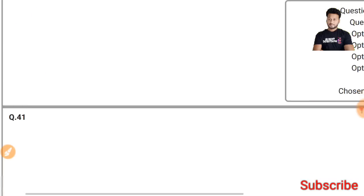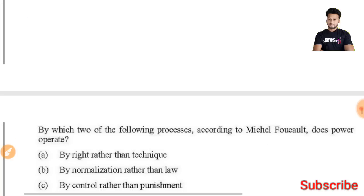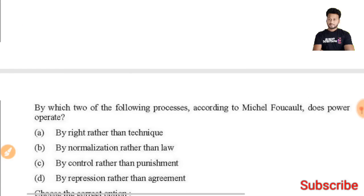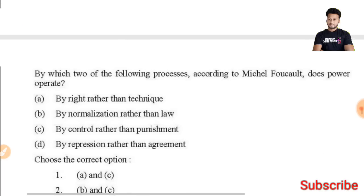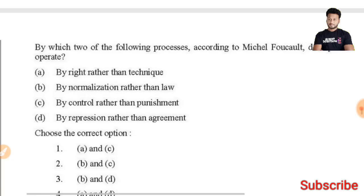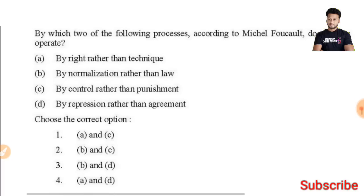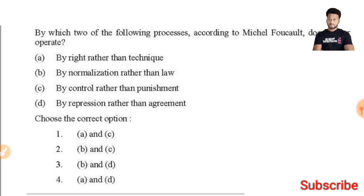Question 41: By which two of the following processes, according to Michel Foucault, does power operate? The right answer is B and D — the third option is the right answer.